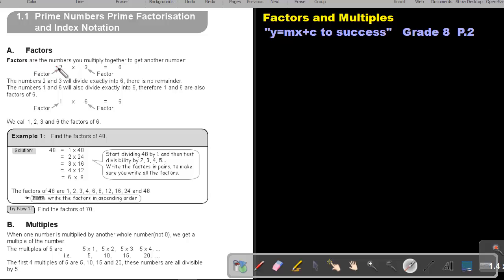Factors are the numbers you multiply together to get another number. Let's take an example, 6. 2 times 3 will be equal to 6, so we will say that 2 and 3 will be factors of 6. The numbers 2 and 3 will divide exactly into 6. There is no remainder. But the numbers 1 and 6 will also divide exactly into 6.